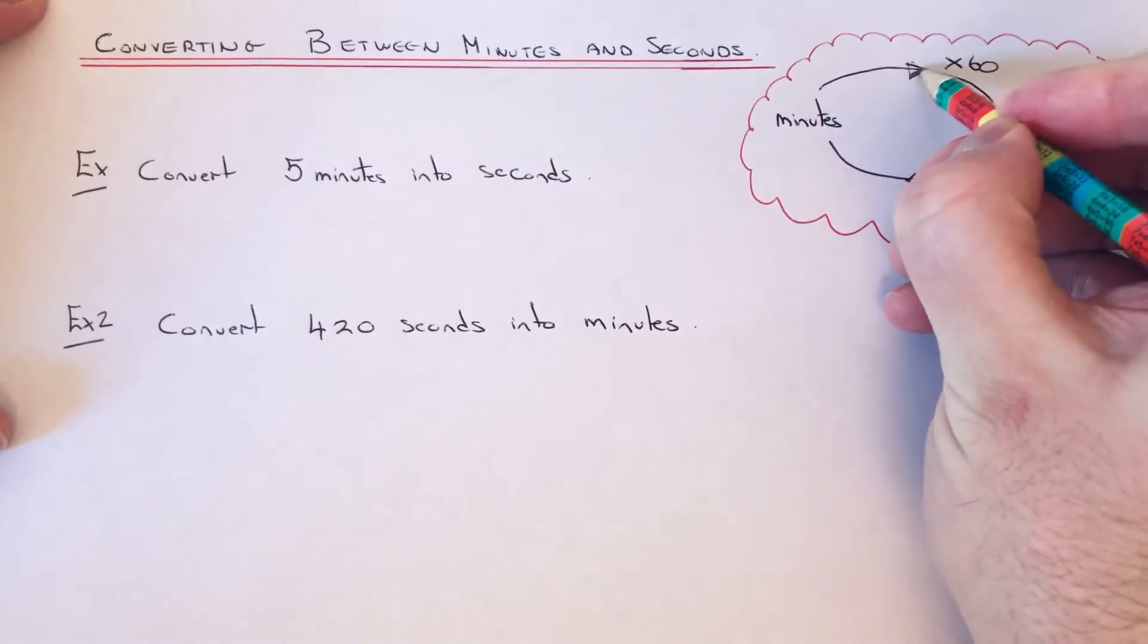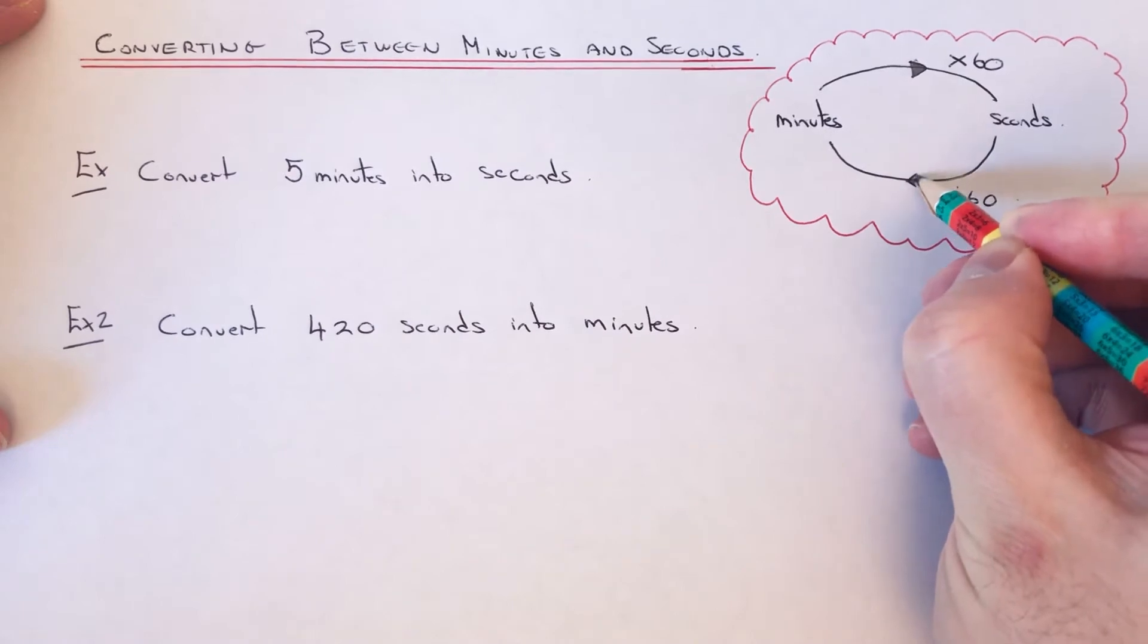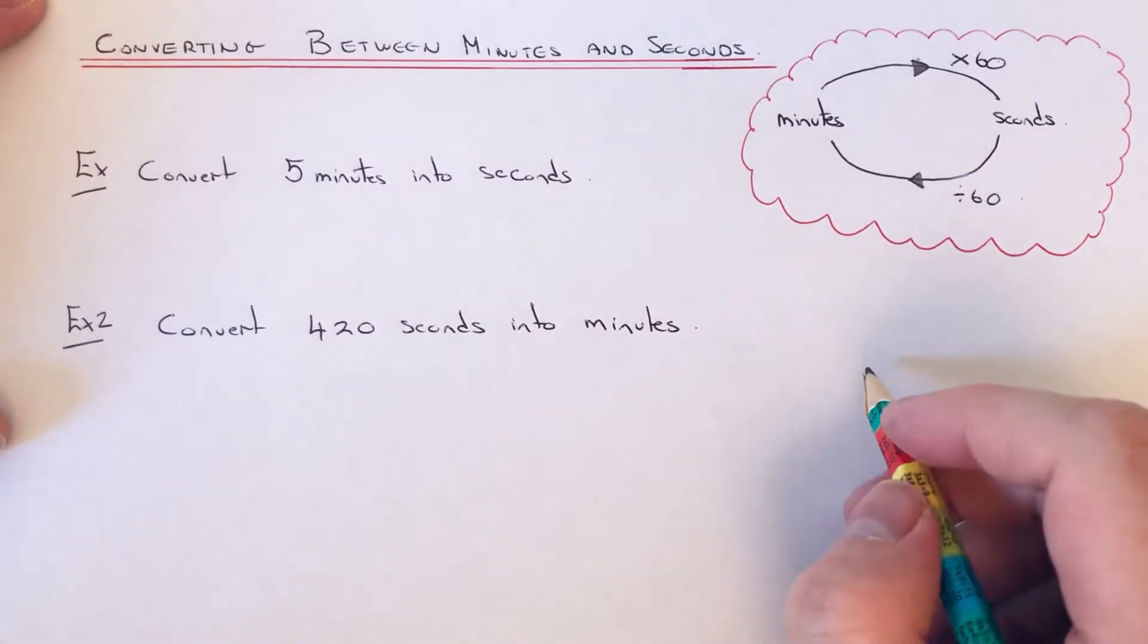And if you're changing seconds back into minutes, you'll be dividing the number by 60.